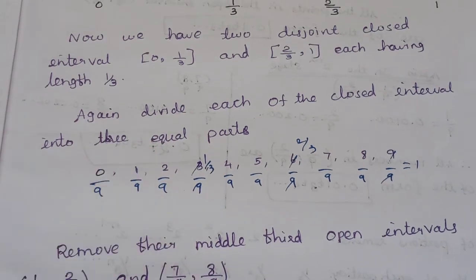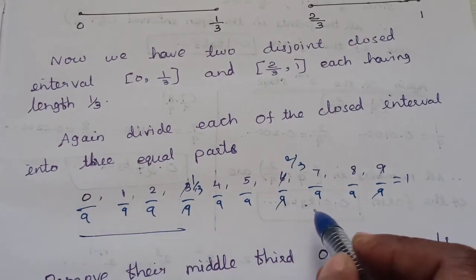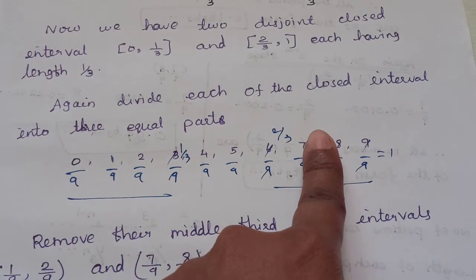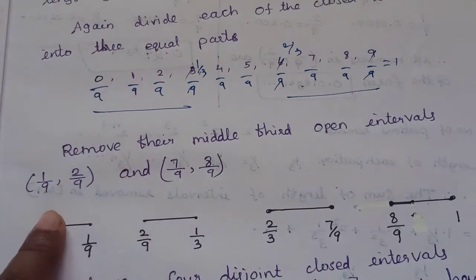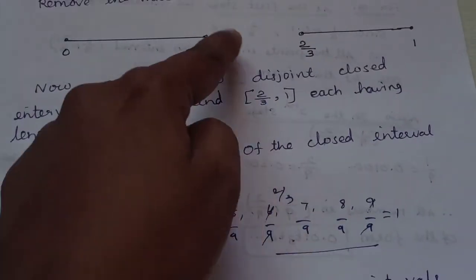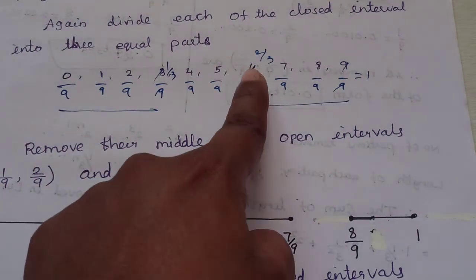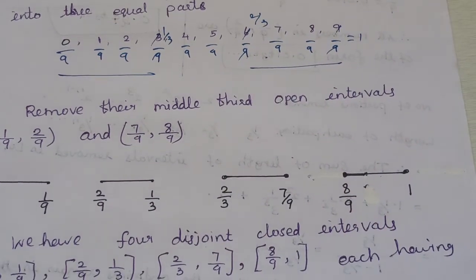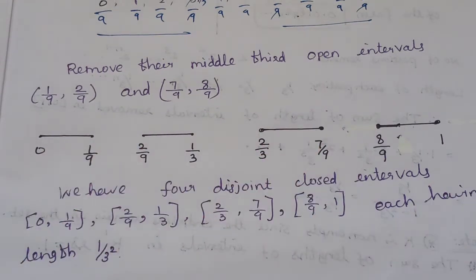We remove the open interval from each sub-interval. The closed intervals that remain are [0, 1/9], [2/9, 3/9], [6/9, 7/9], and [8/9, 1]. Note that 3/9 equals 1/3 and 6/9 equals 2/3. So we have 4 disjoint closed intervals, each of length 1/9.